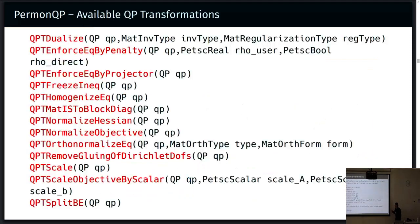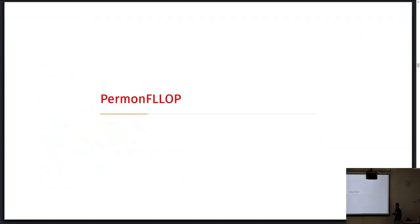Some of the transformations that are available are listed here. The most important is dualization. General dualization will give you a smaller problem that is better conditioned and quite often has simpler constraints. This can be nicely illustrated using QP transformation on FETI. So I will talk a bit about PERMON Flop now.